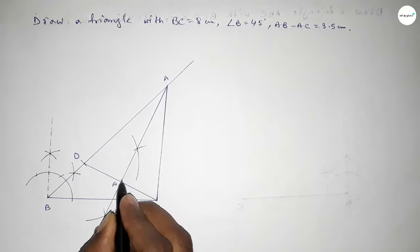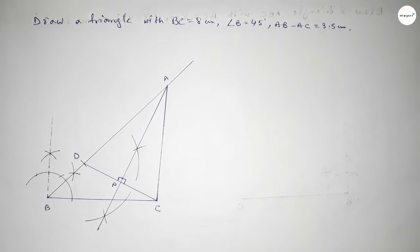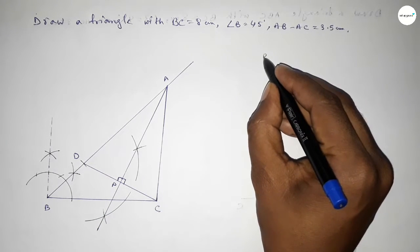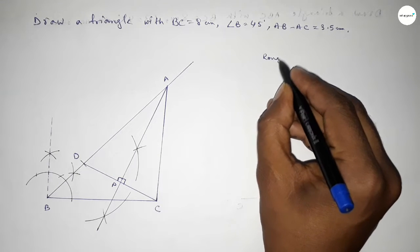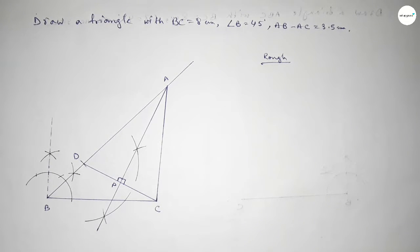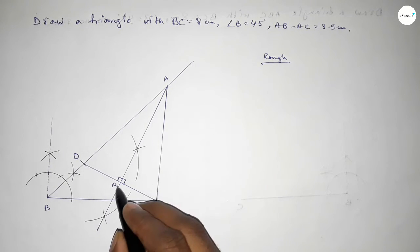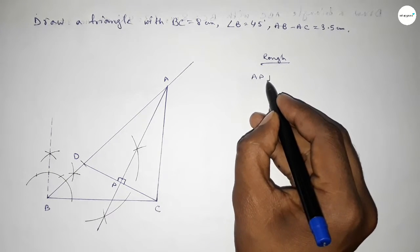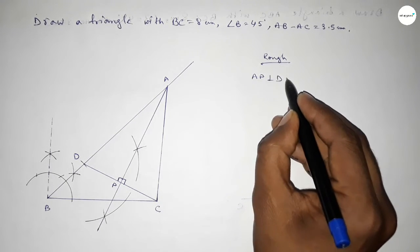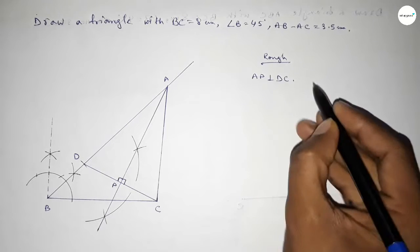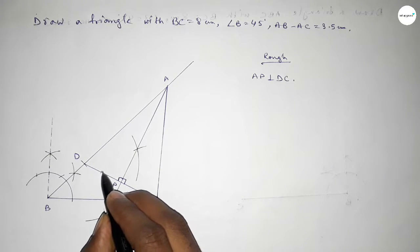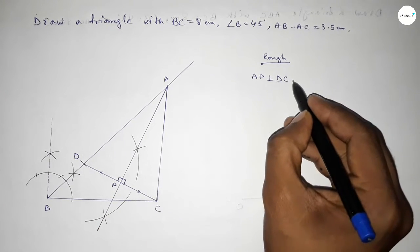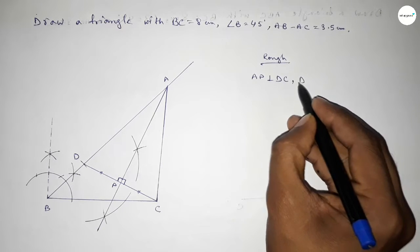Taking here point P, this is a perpendicular 90 degree angle. Now roughly discussing the calculation: AP is perpendicular to CD, and AP bisects DC equally, so the distances DP and PC are equal.